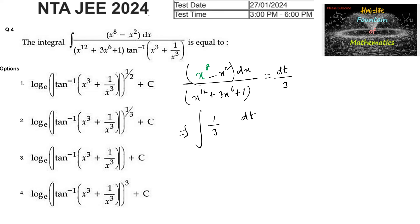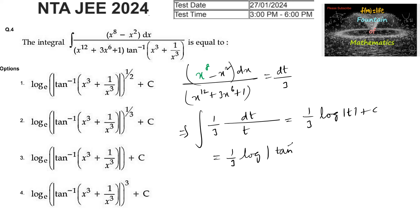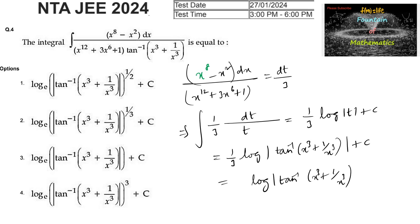So our integral becomes 1 upon 3 times integral of dt divided by t. Since tan inverse of (x power 3 plus 1 by x power 3) is t, we can write 1 by 3 log mod t plus c, that is 1 by 3 log of tan inverse (x power 3 plus 1 by x power 3) plus c. Or we can write log mod of tan inverse (x power 3 plus 1 by x power 3) whole power 1 by 3 plus c.